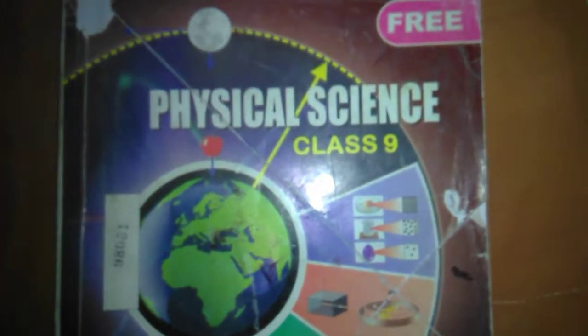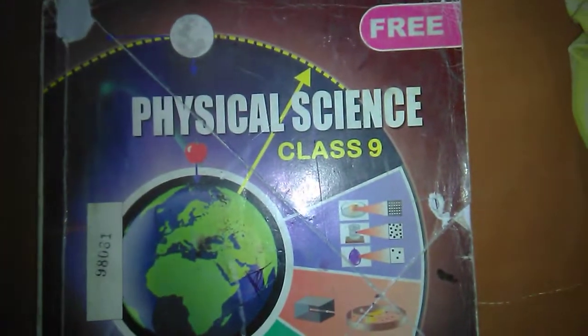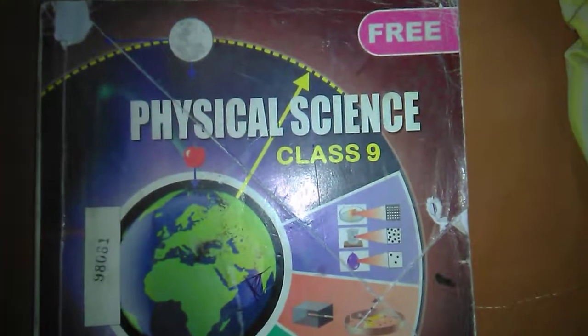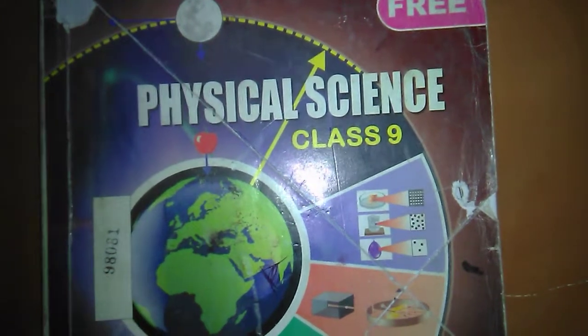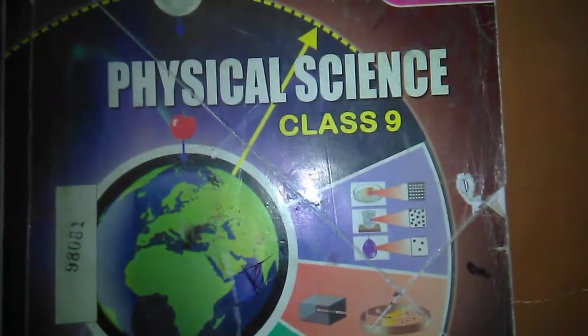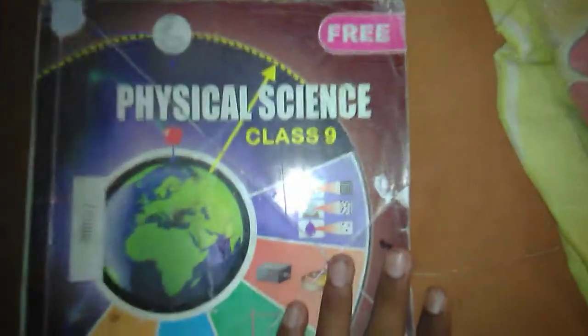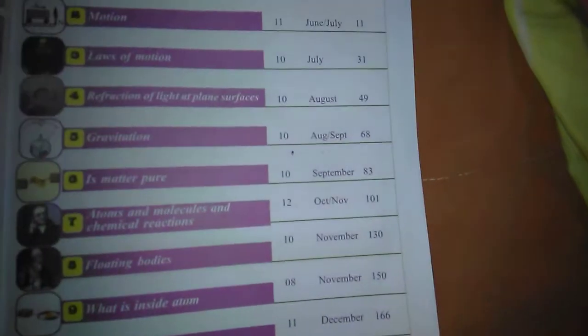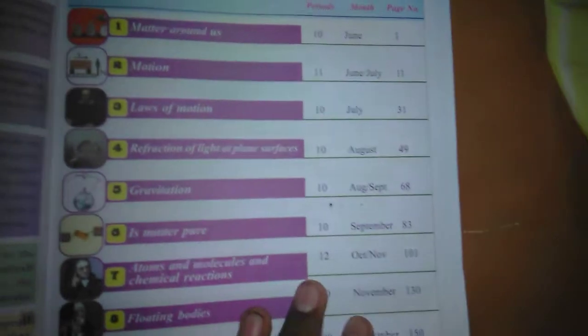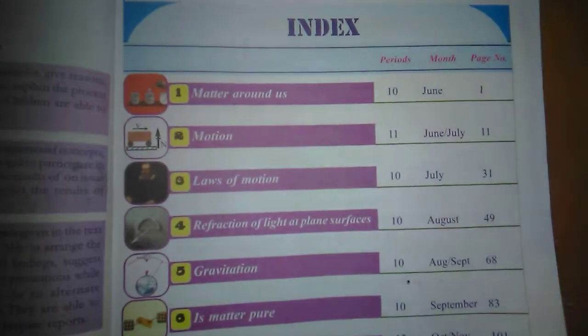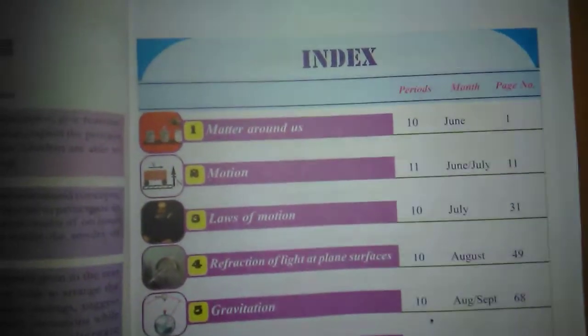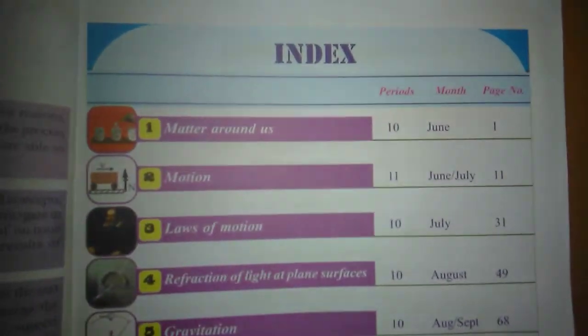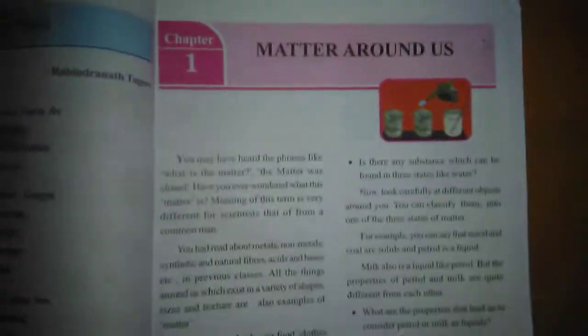Hi guys, welcome back to my channel. Today I will show physical science ninth class lesson number one question answers. First we will see lesson number one — what is the name? Matter Around Us.